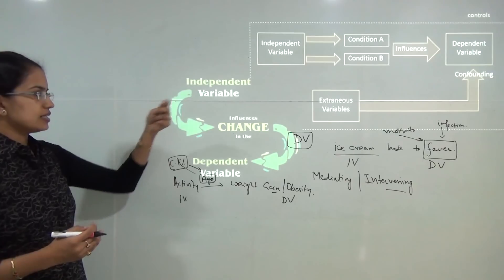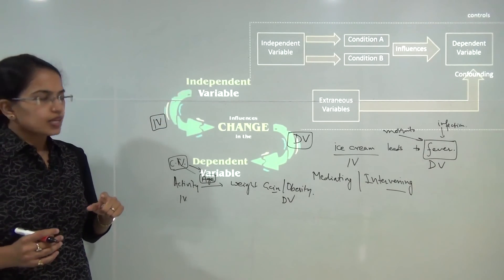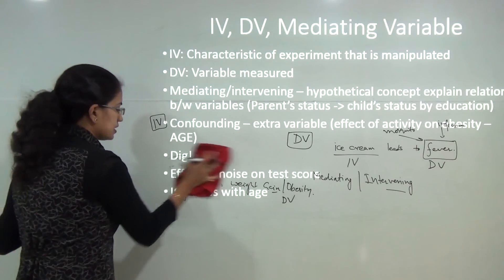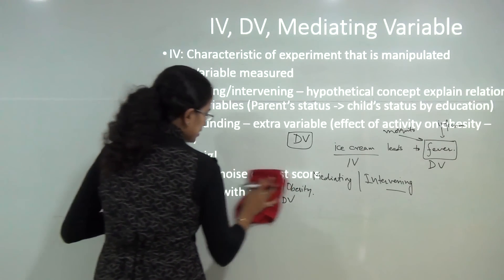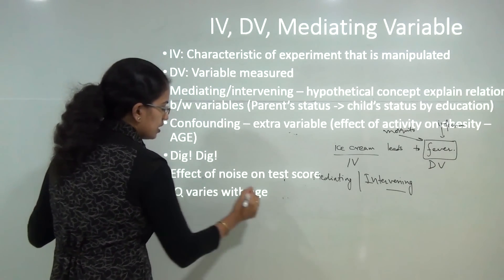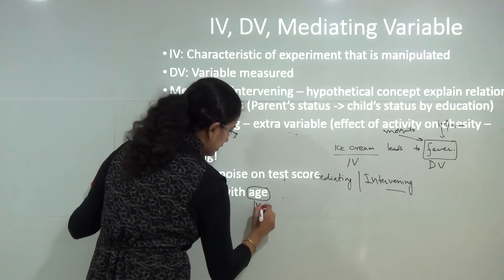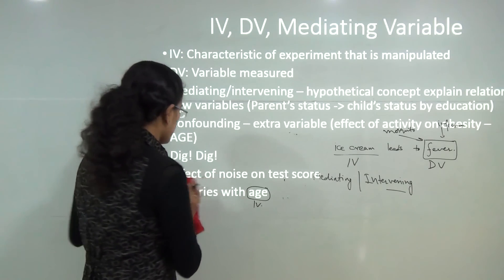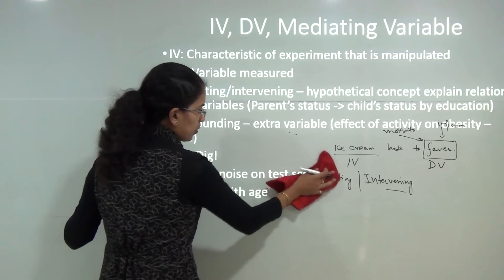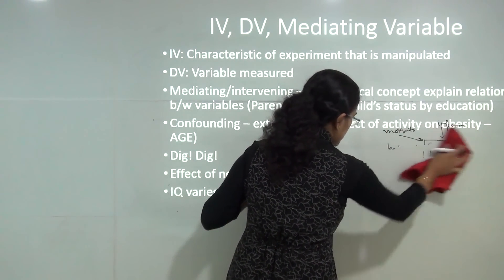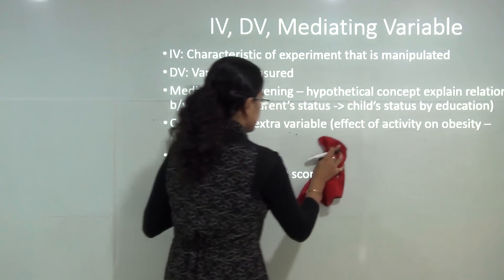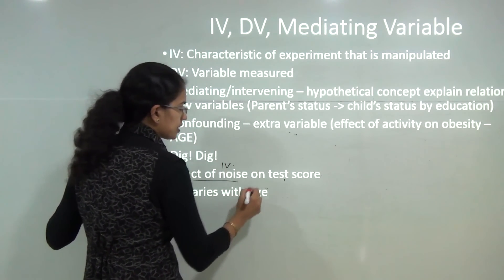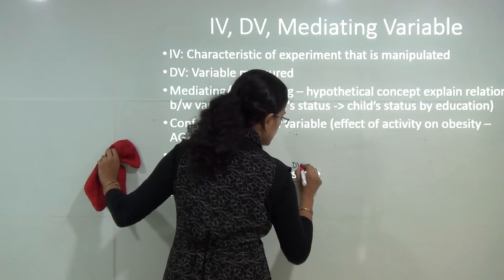Another example to understand dependent and independent variables: IQ varies with age. The IQ is varying and that variation is dependent on age, so age becomes the independent variable and IQ becomes the dependent variable. Next example: effect of noise on test score. The final test score results are dependent on the level of noise, so level of noise becomes the independent variable and test scores become the dependent variable.